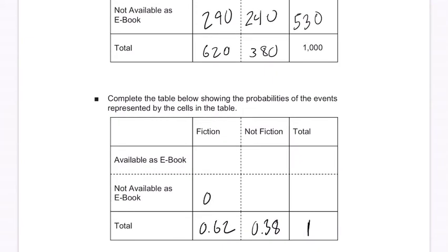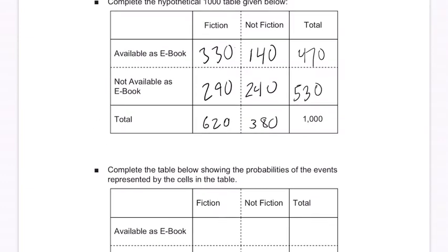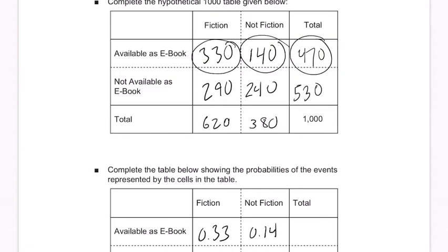We get 0.29, 0.24. 0.34 here, and 530 divided by 1,000 is 0.53. Top row: 0.33, 0.14, and 0.47. Just divide by 1,000 — 0.33, 0.14, and 0.47.